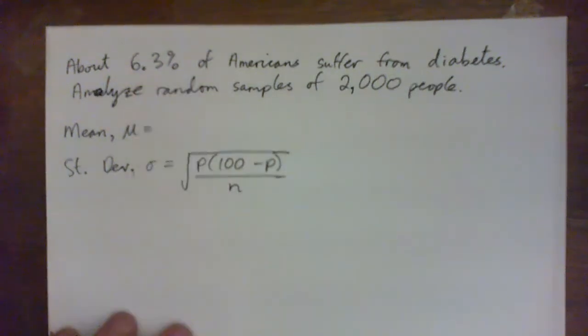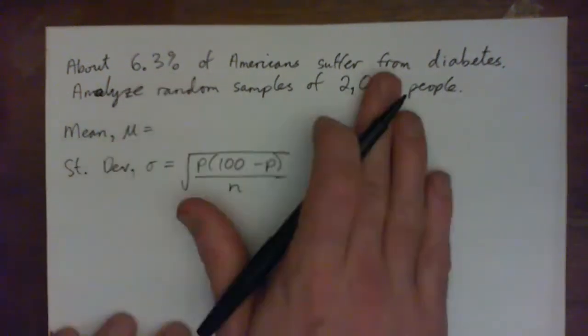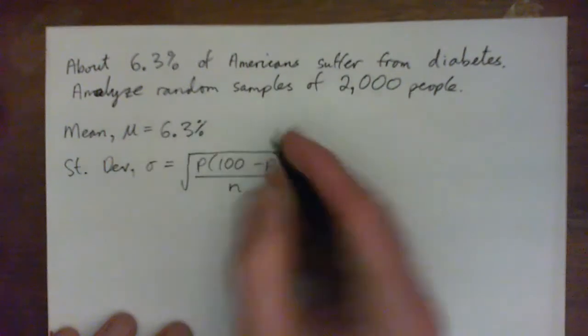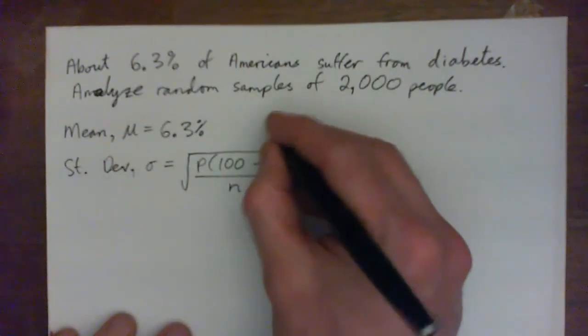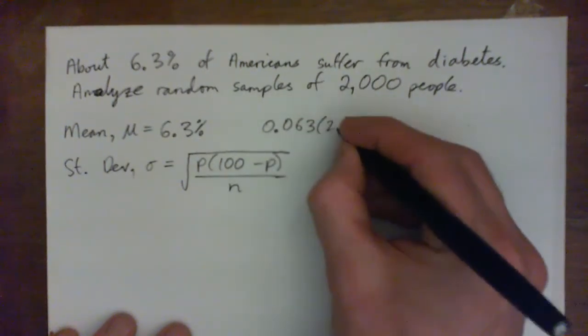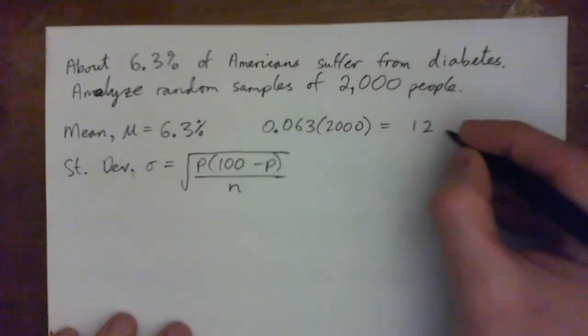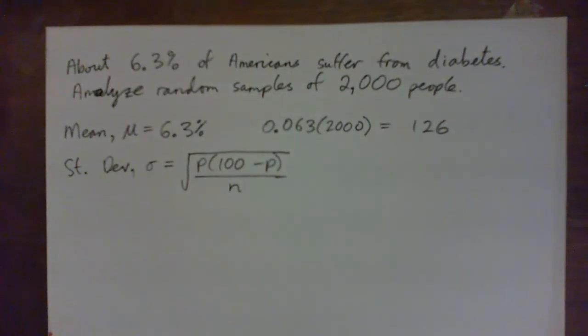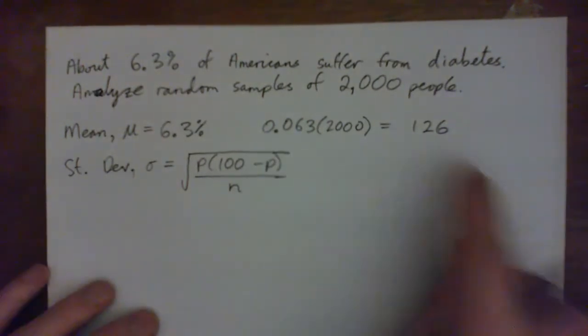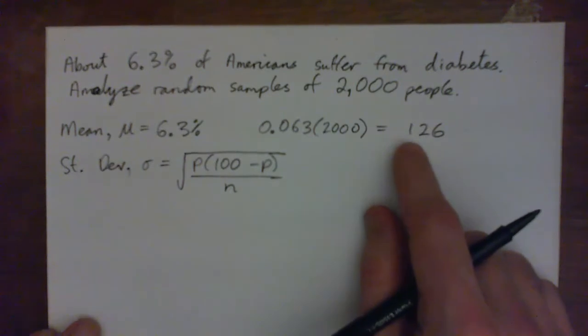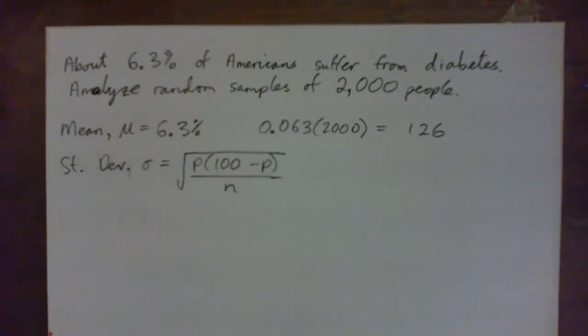So the mean is the same thing. If the population is 6.3% suffer from diabetes, we would expect that on average 6.3% of groups of 2,000 people would also suffer from diabetes. And I'm actually going to calculate 0.063, 6.3% of 2,000, and that is 126, right? So if you calculate that, you'll find if I pick a random 2,000 people, I expect about 126 to have diabetes. The only thing is, and so that is to be expected. I think that part makes intuitive sense.